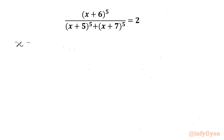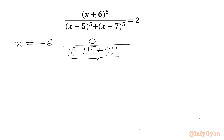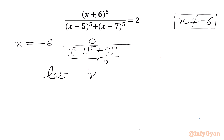I will check our equation at x equal to negative 6. The numerator will be (-6+6)^5 = 0, and the denominator will be (-6+5)^5 + (-6+7)^5 = (-1)^5 + (1)^5 = 0. So the denominator is 0, meaning x = -6 is not allowed. Now I will use substitution: let x+6 = t, so t cannot be 0.